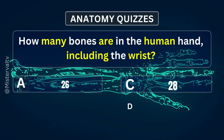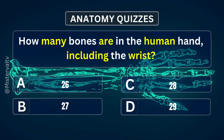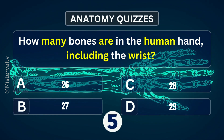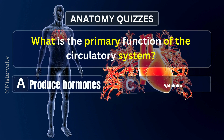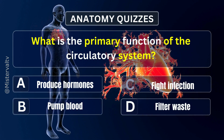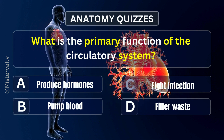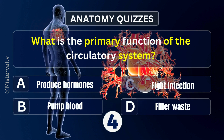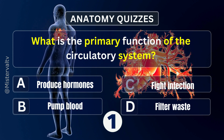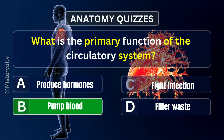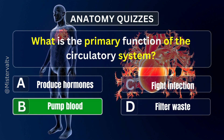How many bones are in the human hand, including the wrist? Answer. B. 27. What is the primary function of the circulatory system? Answer. B. Pump blood.